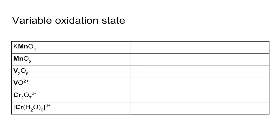I've just picked a few examples to illustrate the point. Manganese in KMnO4 has a plus 7 oxidation state, whereas the manganese in MnO2 is plus 4. Vanadium in V2O5 is plus 5, whereas in VO2+, it's plus 4. Chromium in Cr2O72-, the dichromate ion, is plus 6, whereas in this complex ion, CrH2O63+, it's plus 3.